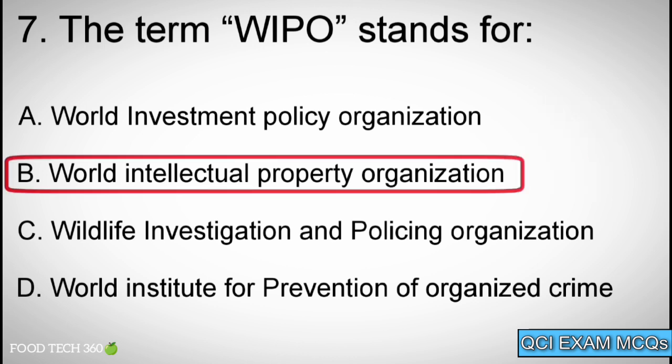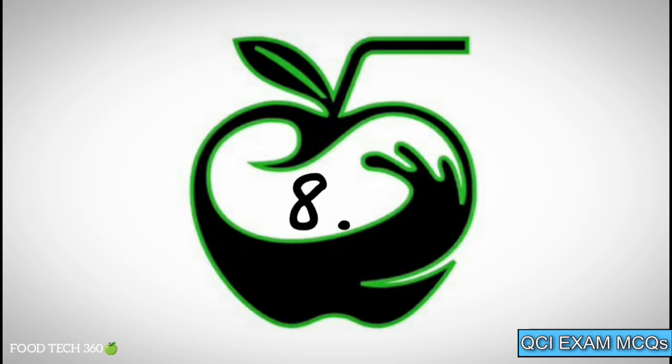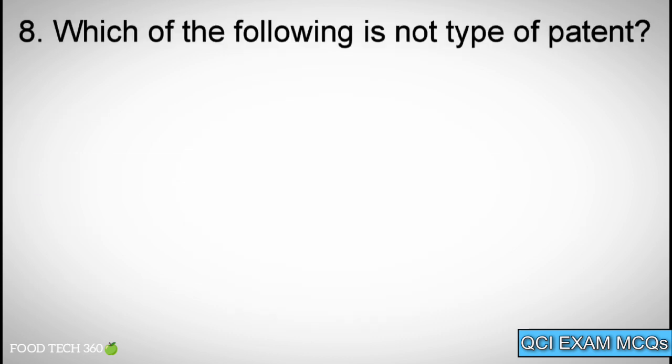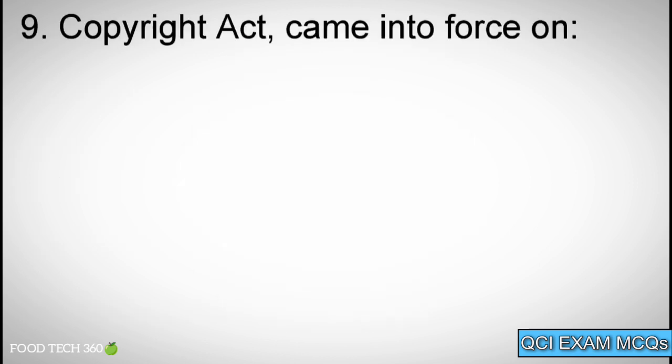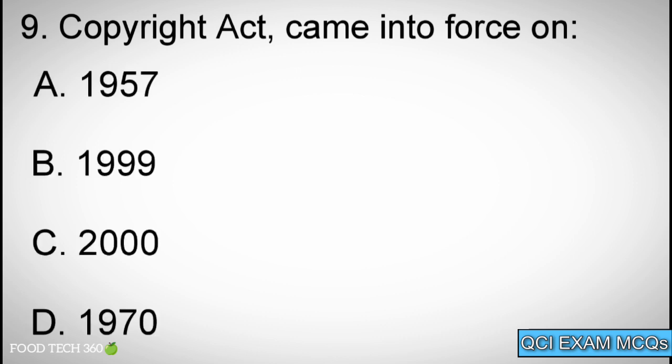Correct answer: B. World Intellectual Property Organization. Question number eight: Which of the following is not type of patent? Options: A. Utility Patents, B. Copyrights, C. Design Patents, D. Plant Patents. Correct answer: B. Copyrights.